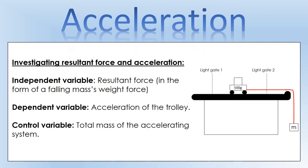In the first experiment we're going to investigate resultant force and acceleration. The thing we're going to change is the resultant force, by changing the mass on a hanger at the end of a string hanging over the side of the desk. The actual force is the weight force of that mass. We'll observe its effect on the acceleration of the trolley. To ensure it's a fair test, we need to make sure the total mass of the accelerating system stays the same.